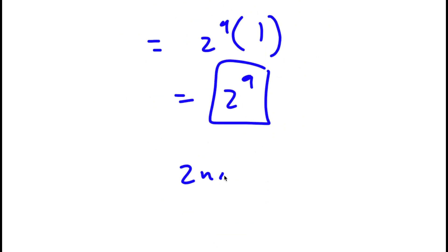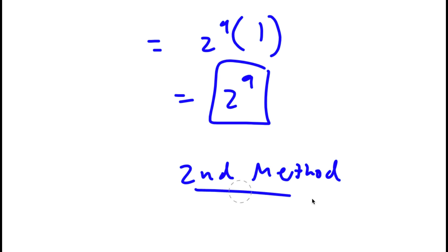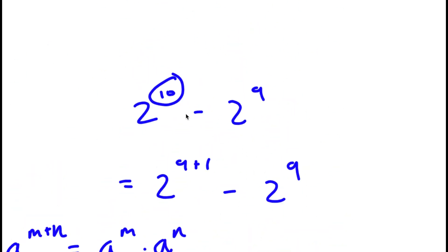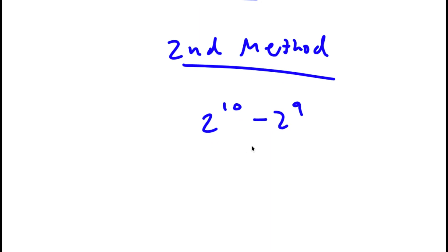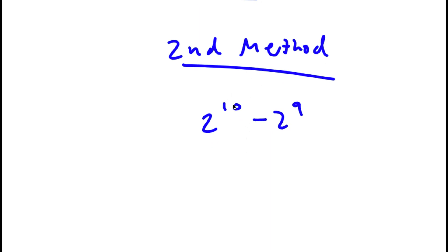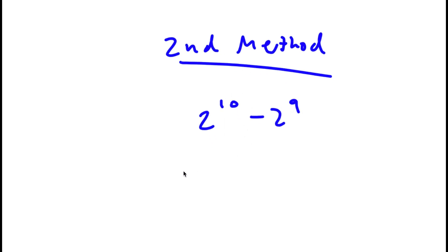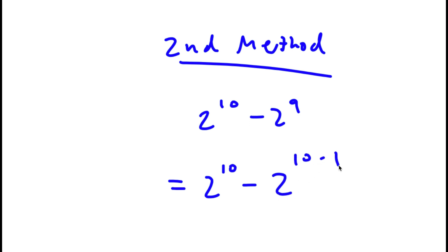Now, a second method of solving this problem. Again, 2 to the power of 10 minus 2 to the power of 9. This time, instead of replacing 10 with 9 plus 1, I'm going to replace 9 with 10 minus 1. So now I have 2 to the power of 10 minus 2 to the power of 10 minus 1.